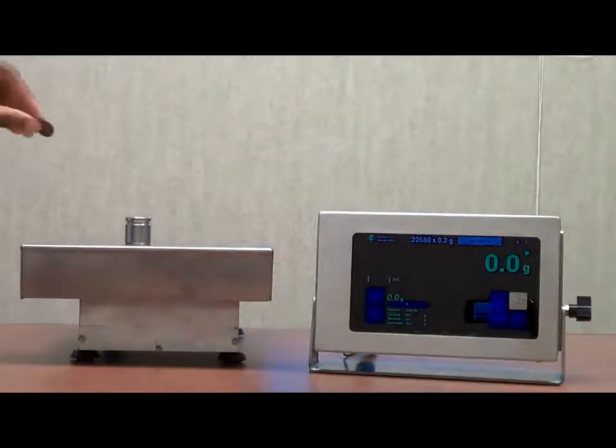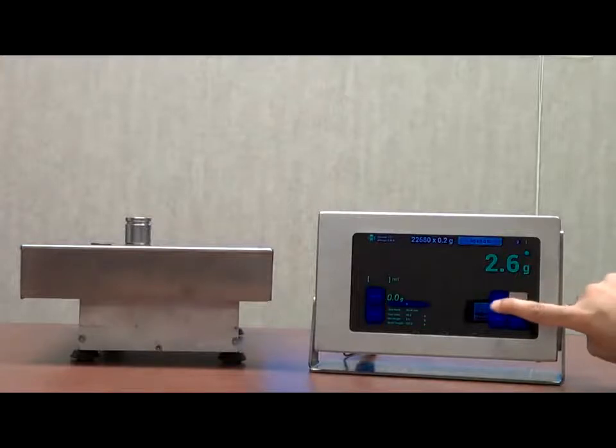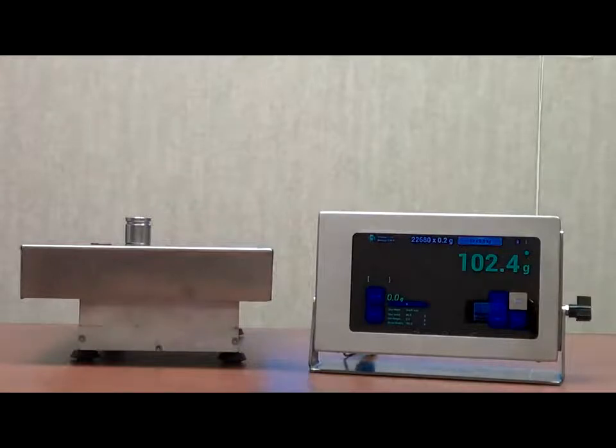I'm going to place a penny on the scale. As you can see, it registered the weight of just the penny. It does not register the weight of the 100 grams that are already on the scale. But with the net gross function, we can show the entire amount that's on the scale. Now it does register the weight of both the 100 grams and the penny.